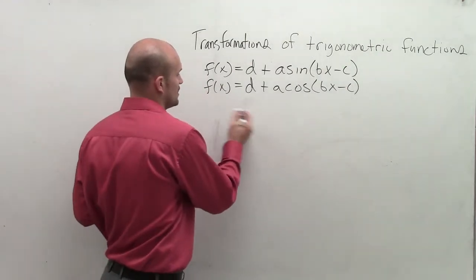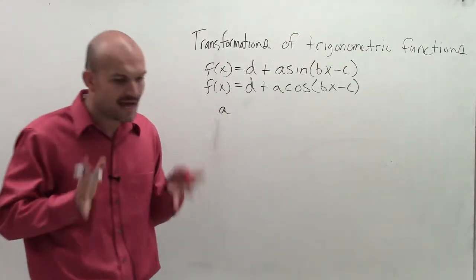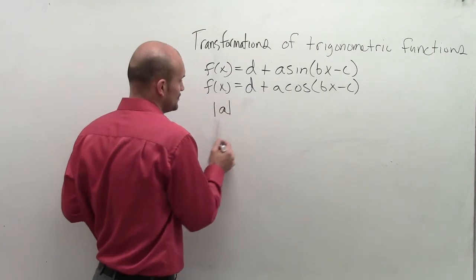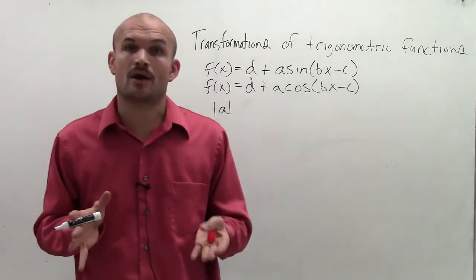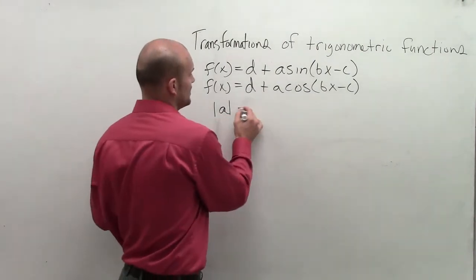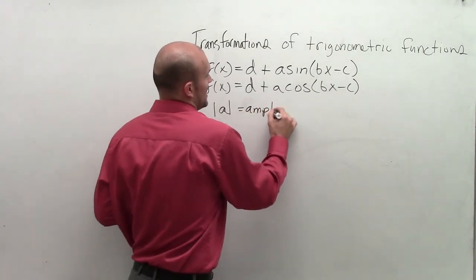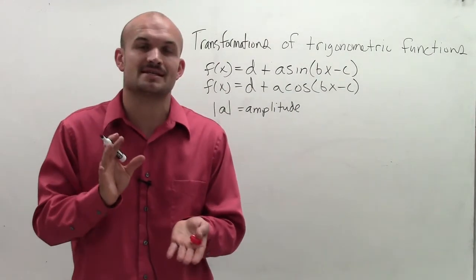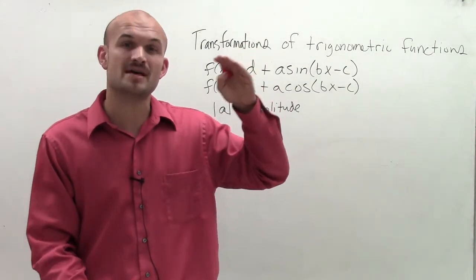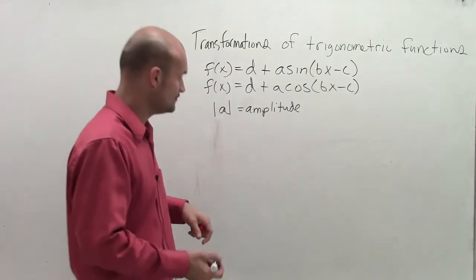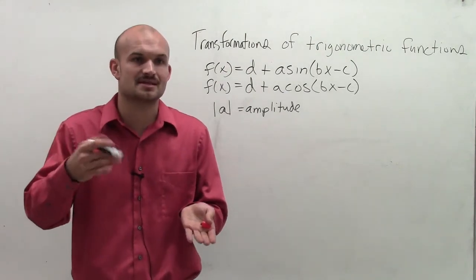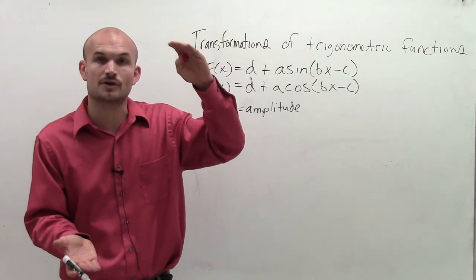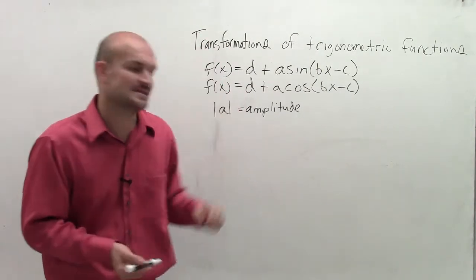First of all, let's talk about our a. Now if you remember, a represented our amplitude, but it was actually the absolute value of a that represented our amplitude. So a is the amplitude. If you remember what the definition of amplitude was, amplitude was the half distance between your maximum and your minimum of your graph. So if you want to look at the half distance, just take your maximum and your minimum of your graph, divide that by 2, and that's going to be your amplitude.